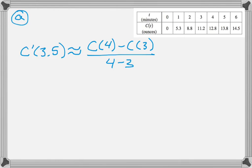Now we just have to look some stuff up in the table. The first sign I used was approximately equal to because I'm approximating C prime of 3.5. But now I'm using equals because the thing I'm about to write is actually equal to the fraction I just wrote there.